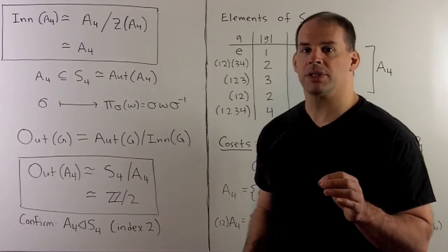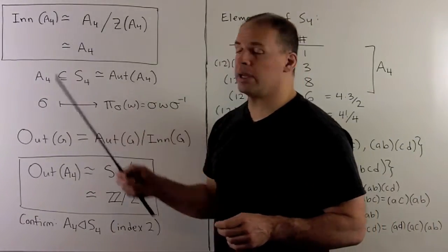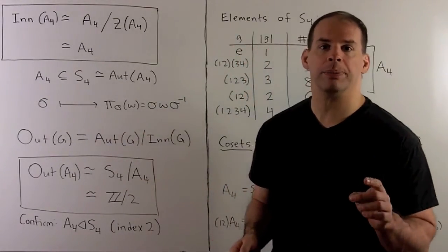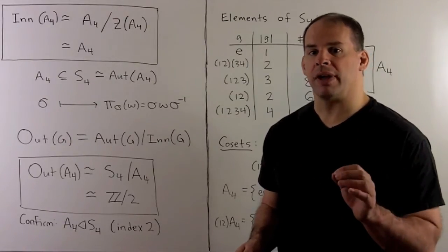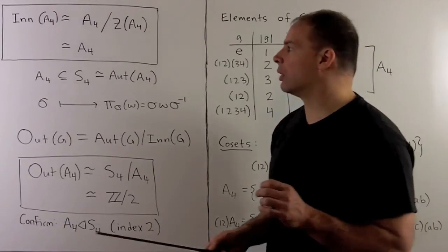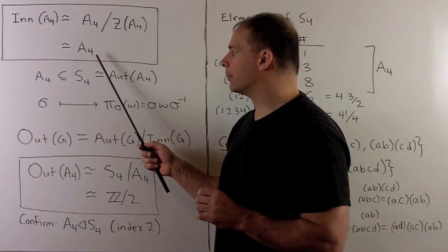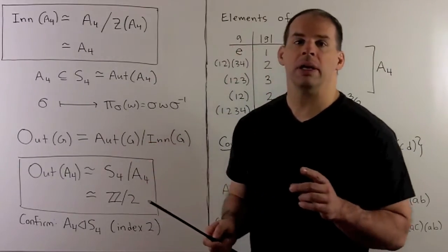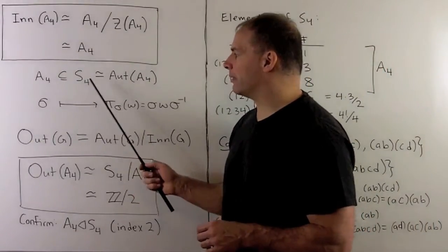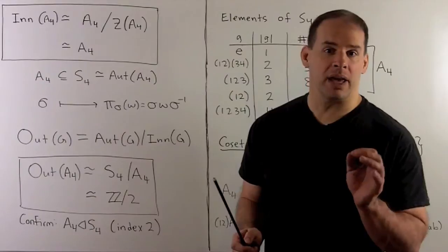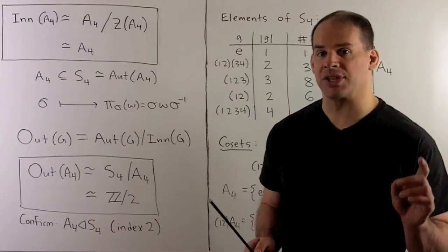For the inner automorphisms, Inn(A4) is isomorphic to the quotient group A4 by the center of A4. Center of A4 is the identity element, so isomorphic to A4. Note Inn(A4) is a normal subgroup of Aut(A4), and A4 is a normal subgroup of S4 by the index 2 theorem.